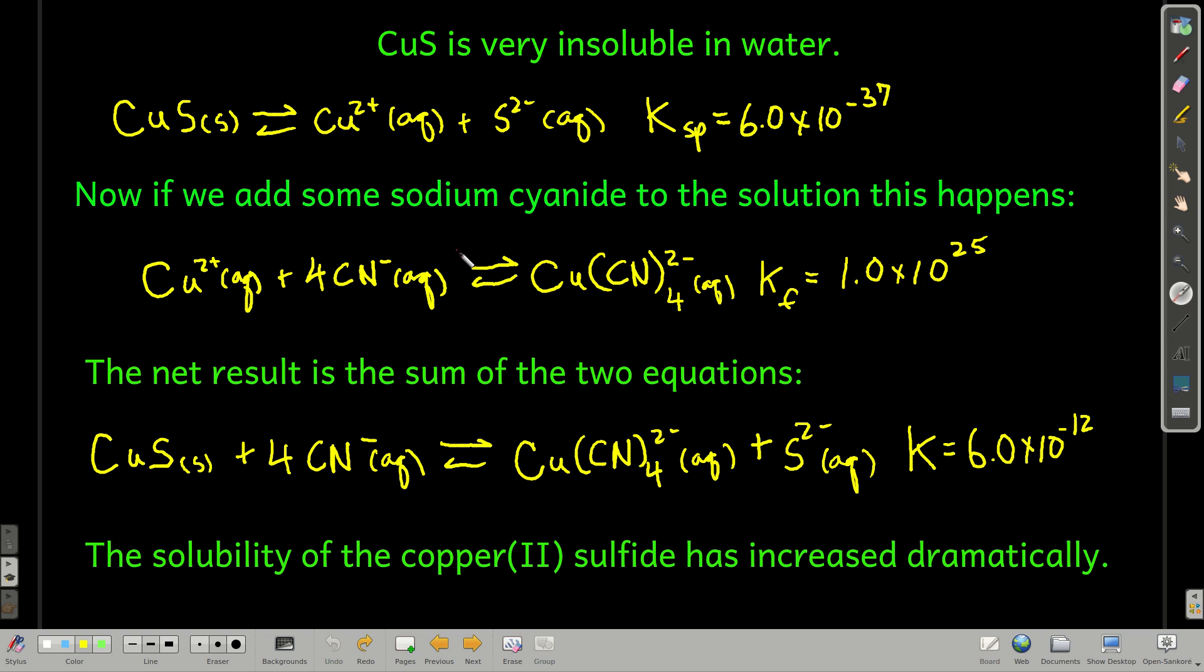So overall, if we add up these two reactions, what cancels are the copper ions. Let's do it this way. That cancels, and that cancels. Everything else stays, and this is the resulting equation. And remember, when we add equations, we multiply their Ks. So the K for the resulting equation is 6 times 10 to the minus 12th, 25 orders of magnitude larger than for copper(II) sulfide.